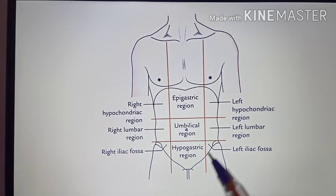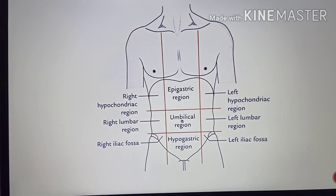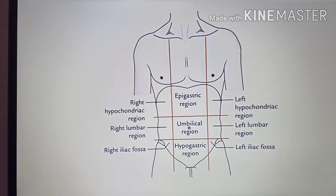This gives us an idea of the exact source where the pain is arising. Apart from dividing the abdomen into nine regions, we can also divide it into four quadrants. This can be done by taking two planes — one is the transumbilical plane, which is an imaginary line passing through the umbilicus.